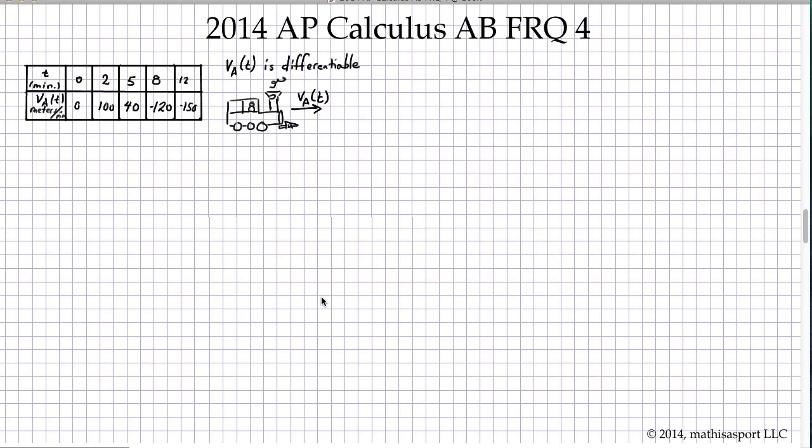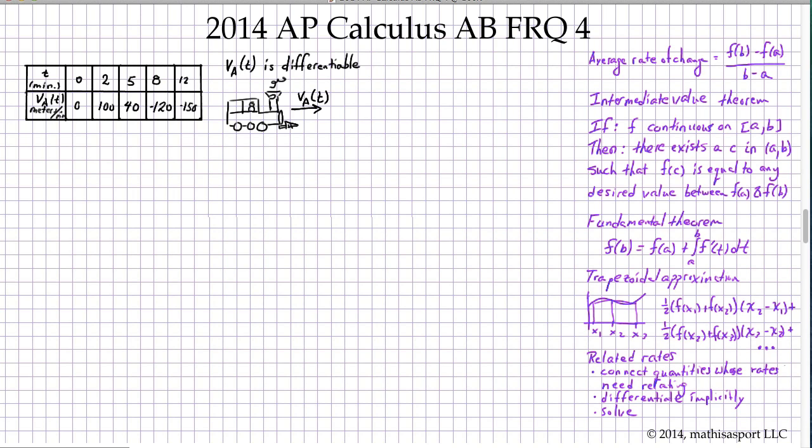Now this is a problem about a train and who doesn't like trains? What do we know about this train? We're given its velocity at a series of points in time, and we also know that the velocity is differentiable over the entire interval in question. The problem is going to ask us to perform certain operations on understanding the train's position, velocity, acceleration, and distance between it and another train. So the formulas I've listed on the right should be helpful.